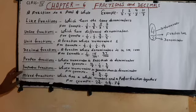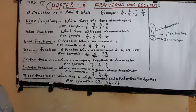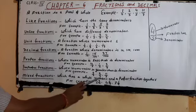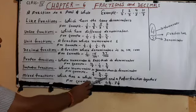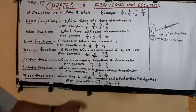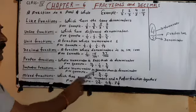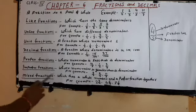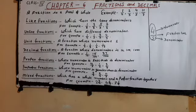Second, improper fraction — whose numerator is greater than the denominator. For example, 7 by 3, 9 by 4, and 11 by 7. You can see all the numerators are greater than the denominator. So, this is the improper fraction.